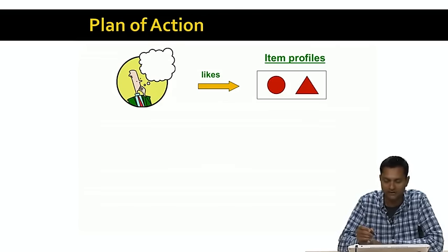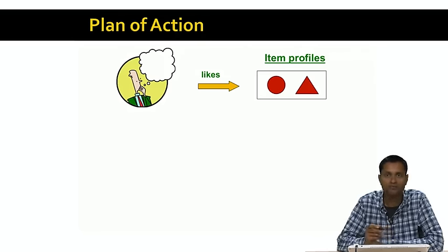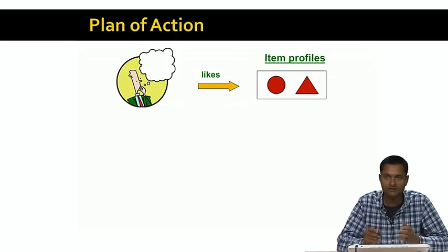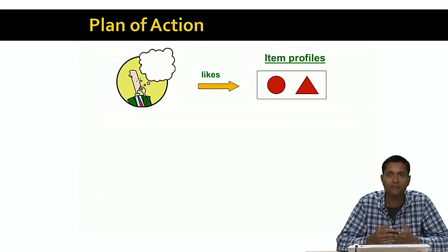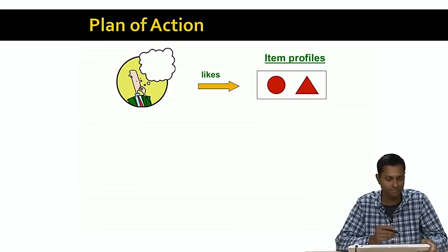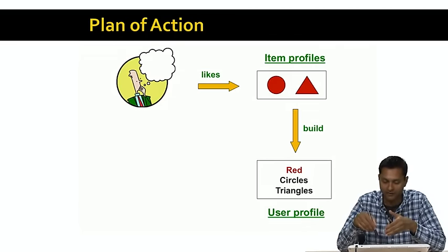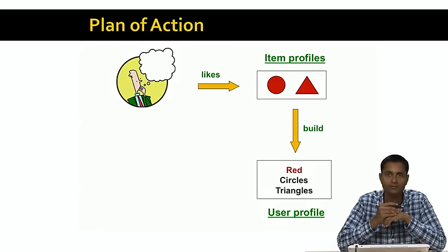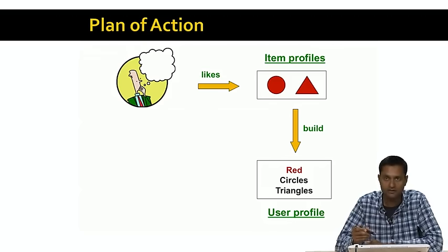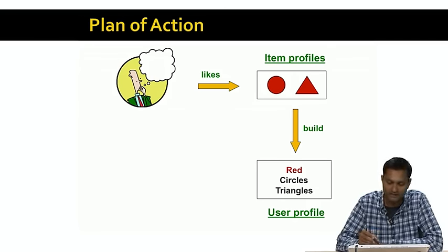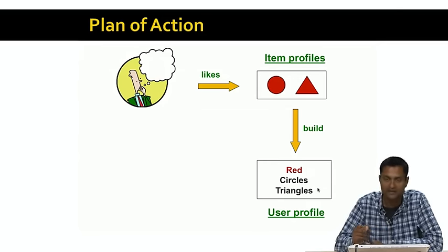For example, let's say we are dealing with geometric shapes. Let's say the user likes a red circle and a red triangle. We might build item profiles that say the user likes red items, or that the user likes circles. From these item profiles, we are going to infer a user profile. The user profile infers the likes of the user from the profile of items the user likes. Because the user likes a red circle and a red triangle, we infer that the user likes the color red, circles, and triangles.